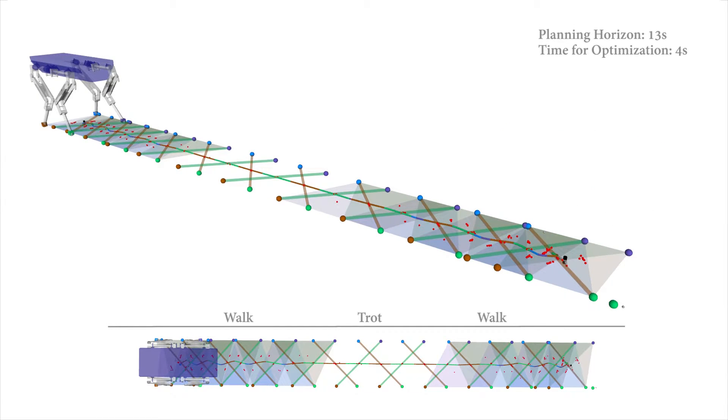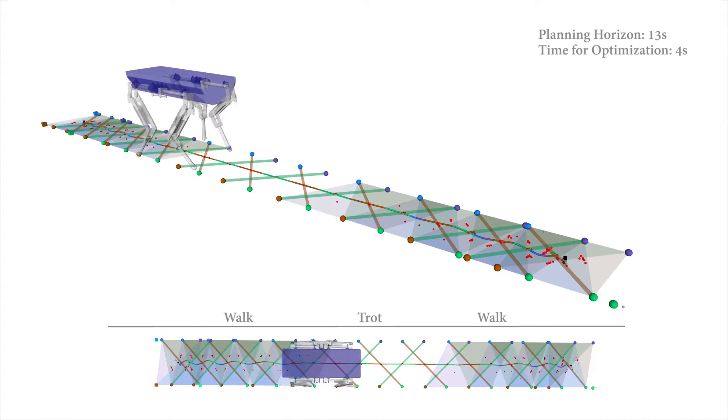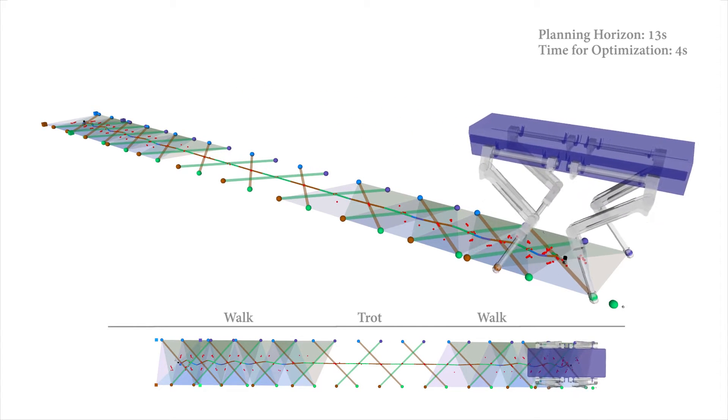In contrast to the previous motion, the support lines now diagonally intersect at the center. This allows the center of pressure to be closer to the center of mass and therefore creates less sideways swaying of the body.